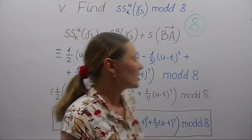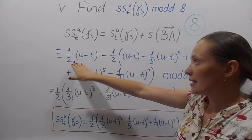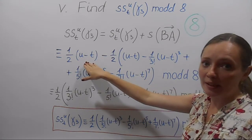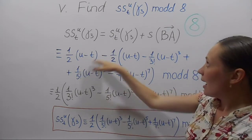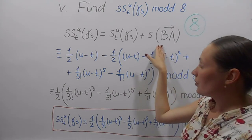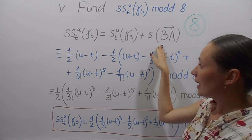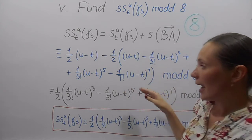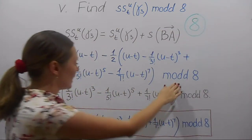From the third part of the problem, we know that the sine area is one half of the difference u−t mod d8. And from the previous part of the problem, we know that the sine area of AB is the expanded expression with powers of (u−t). Everything is mod d8.